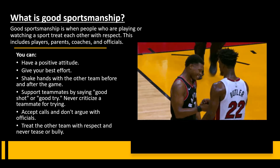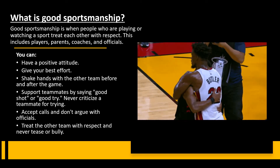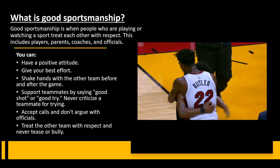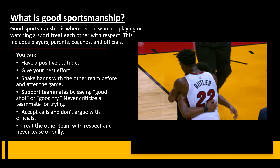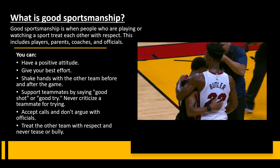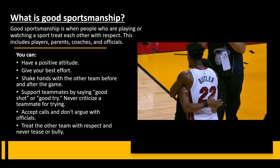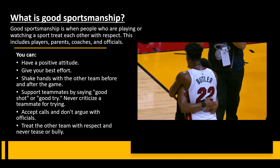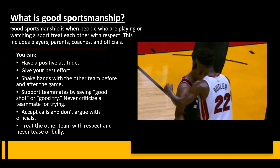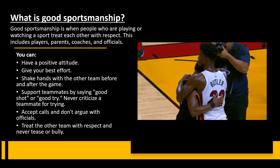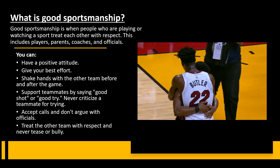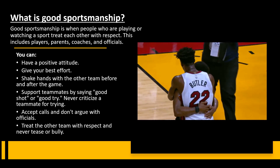What is good sportsmanship? You need good sportsmanship when you play all sports. Good sportsmanship is when people who are playing or watching a sport treat each other with respect — this includes players, parents, coaches, and officials. You can have a positive attitude, give your best effort, shake hands with the other team before and after the game, and support teammates by saying 'good shot' or 'good try.' Never criticize a teammate for trying. Accept calls and don't argue with the officials. Treat the other team with respect and never tease or bully.